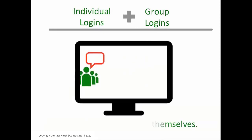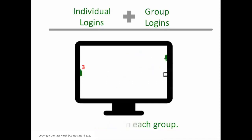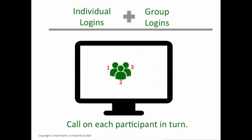Assign one participant in each location to be the group's representative at the microphone, relaying questions or passing the microphone around, displaying communication icons for the group, and adding text chat messages. Follow a deliberate rotation for soliciting feedback from each member of the group.